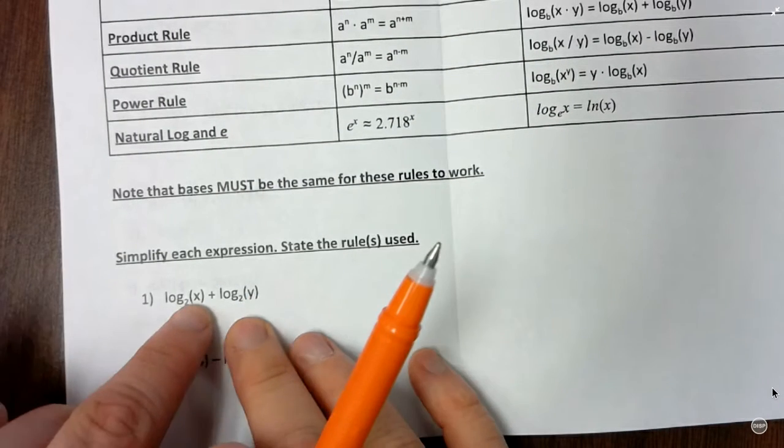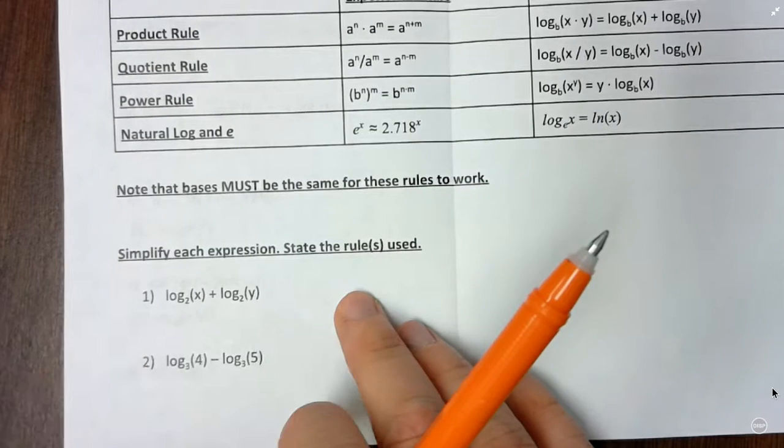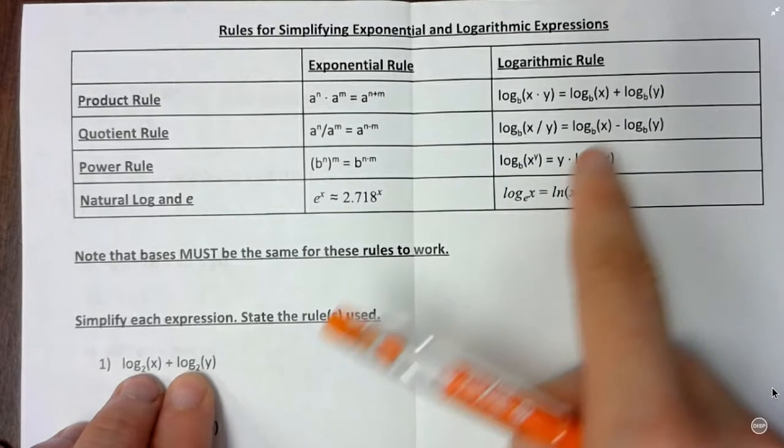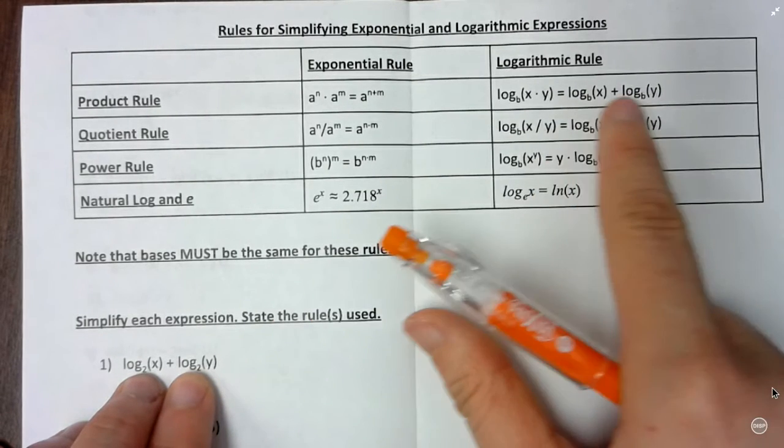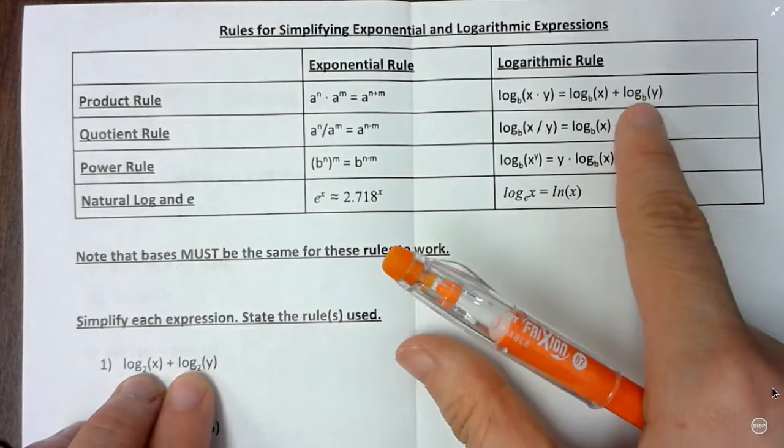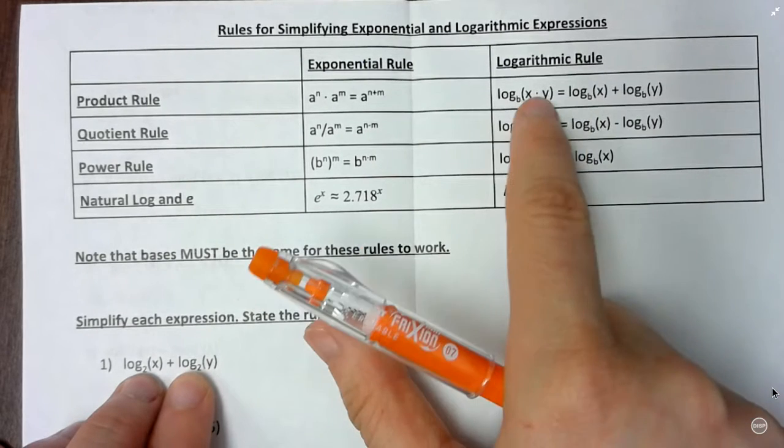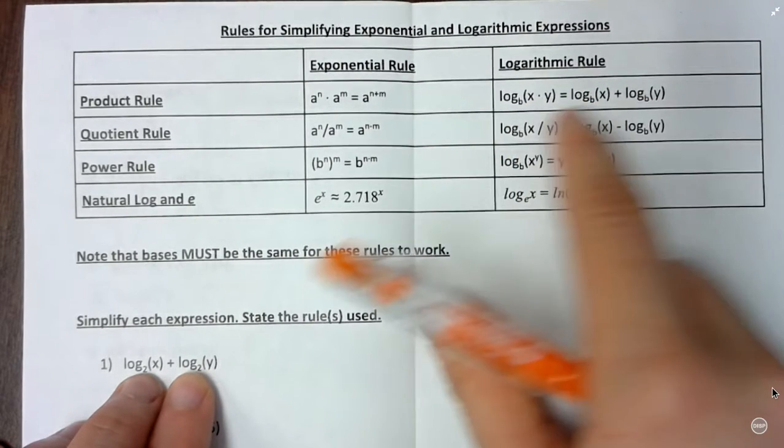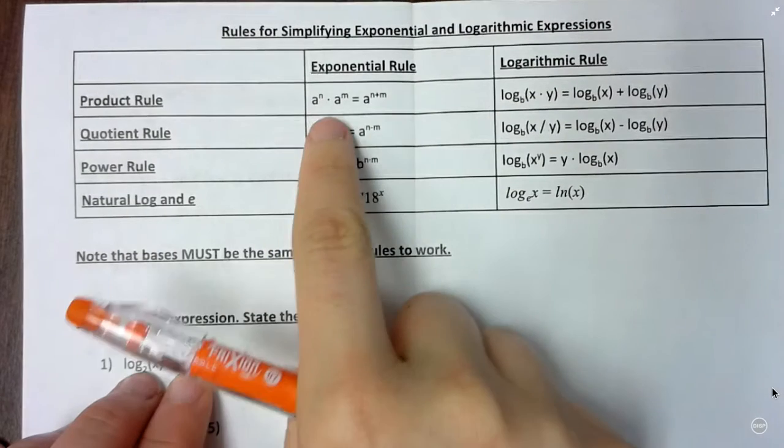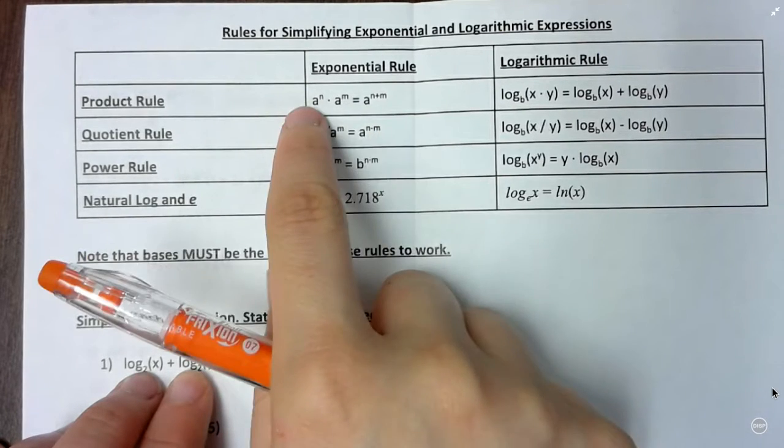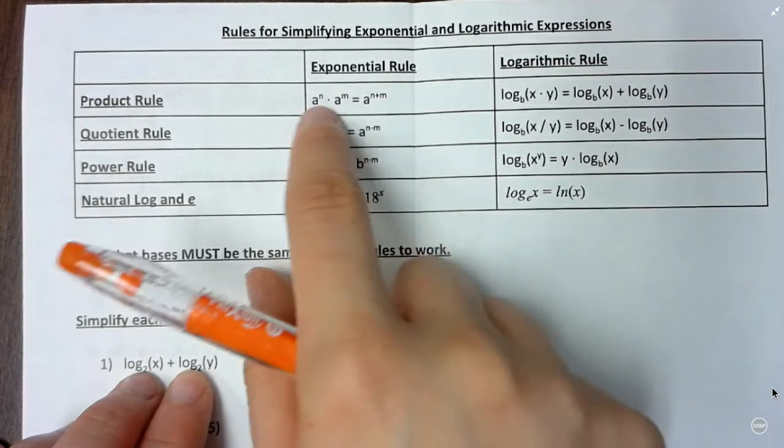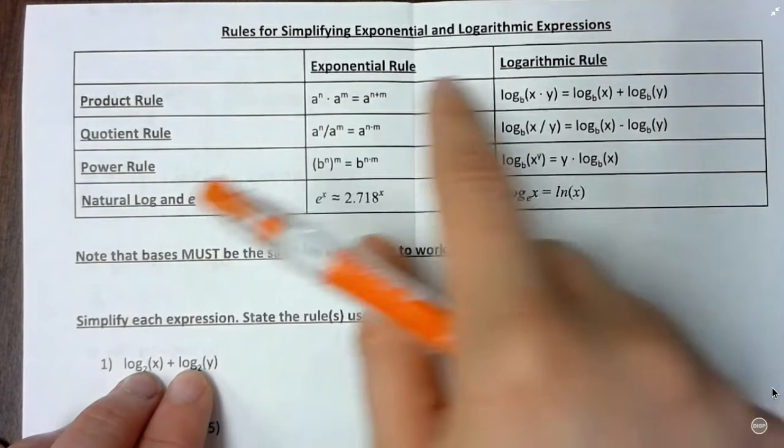Let's look at number one. I've got log base 2 of x plus log base 2 of y. And what I want to do is look at my rules and see if there's one that shows a log plus a log. And it's right here. So it's called my product rule. If I have a log plus another log and they both have the same base, then to combine them together, I take their arguments. So in this case, the x and the y and multiply them together. And then I end up with just the one log. And that comes from this exponent rule here.